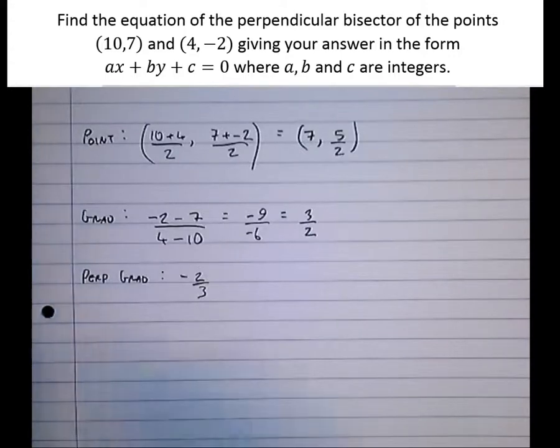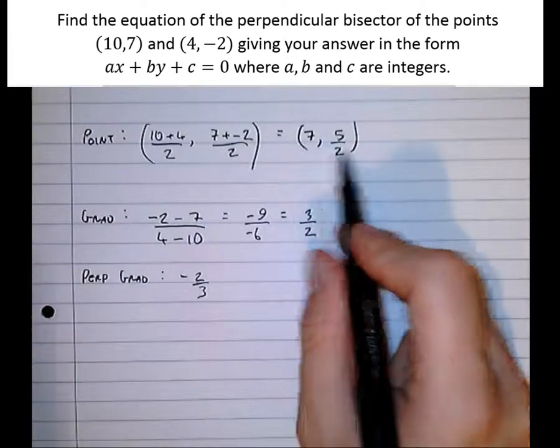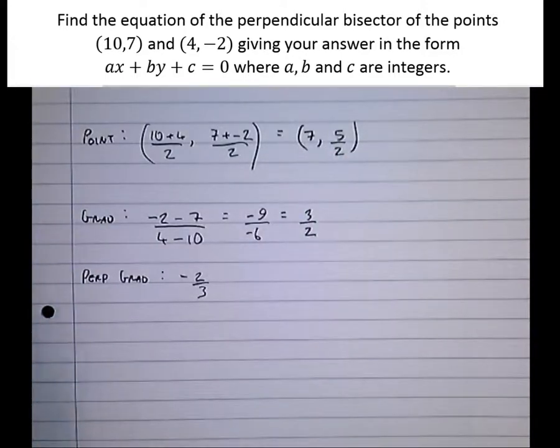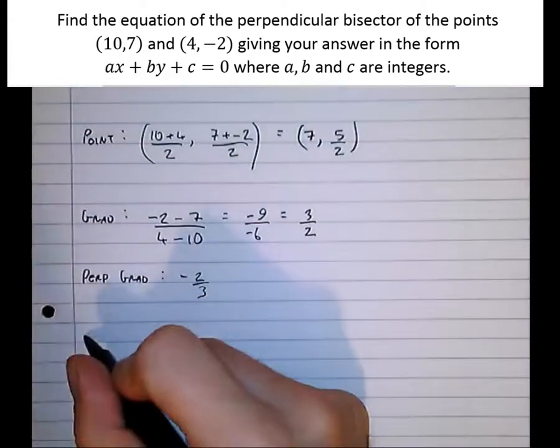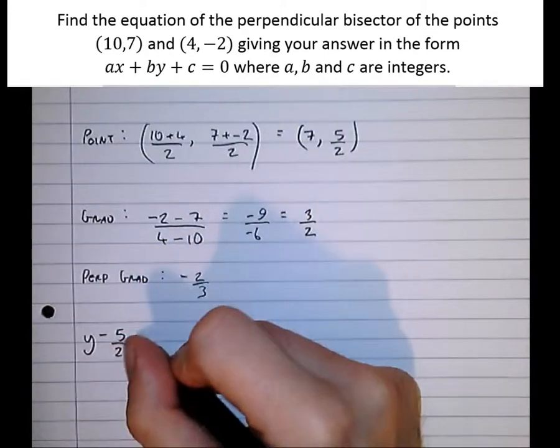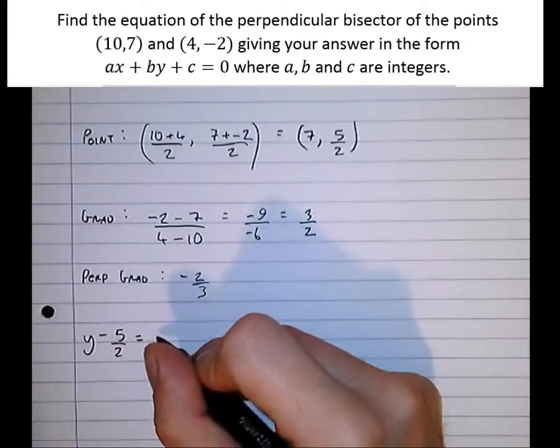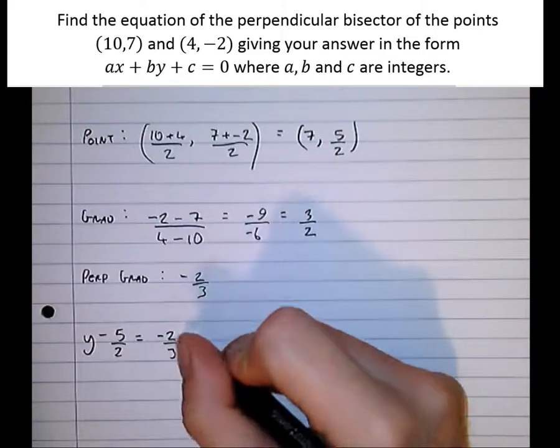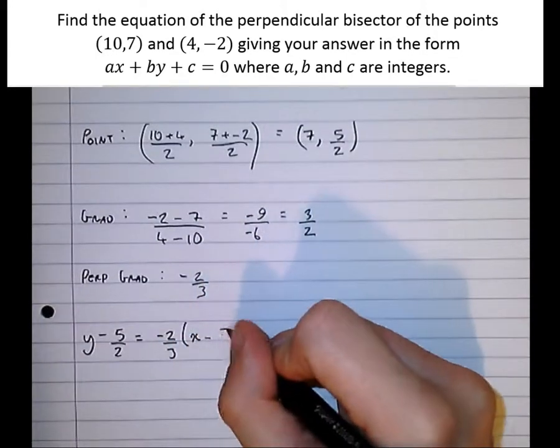So we've got the perpendicular gradient now, we've got this here, and we've got a point that the graph passes through. Let's work out the equation. y minus the y coordinate equals gradient minus 2 thirds, the perpendicular gradient, times x minus the x coordinate.